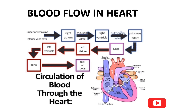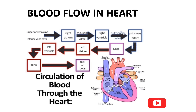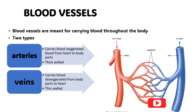Blood vessels are meant for carrying blood throughout the body and are mainly of two types: arteries and veins. Arteries carry oxygenated blood from the heart to the body parts and are generally thick-walled compared to veins. Veins carry deoxygenated blood from the body parts back to the heart and are thin-walled compared to arteries.